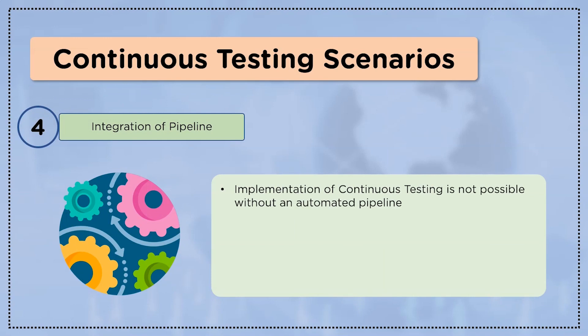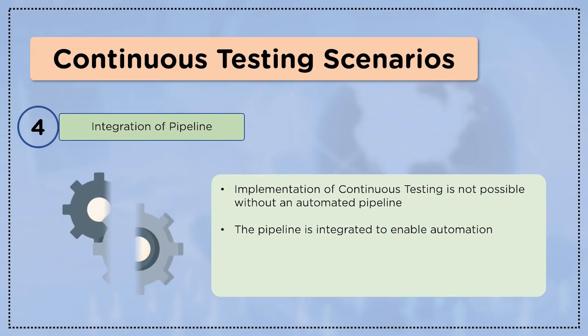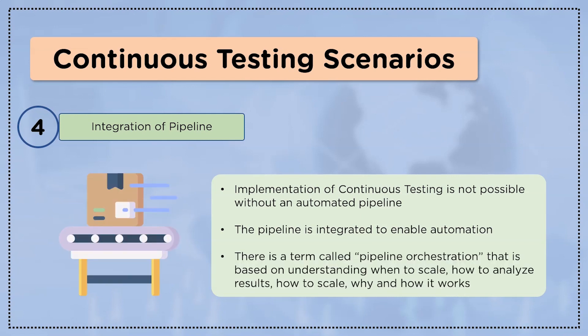The fourth and last scenario in this section is integration of pipeline. The most important and basic thing needed for the implementation of continuous testing is the automated pipeline. To enable automation, it is necessary to integrate a pipeline. There is a term called pipeline orchestration, which is based on understanding when to scale, how to analyze results, why it works, and how it works.